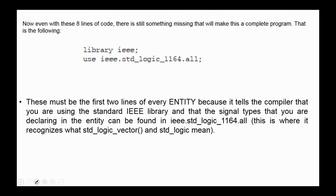In addition to these two parts we have to include these two statements at the beginning of the program. This must be the first two lines of every entity because it tells the compiler that you are using the standard IEEE library, and that the signal type that you are declaring in the entity can be found in the IEEE.